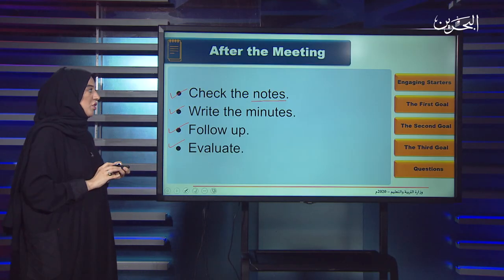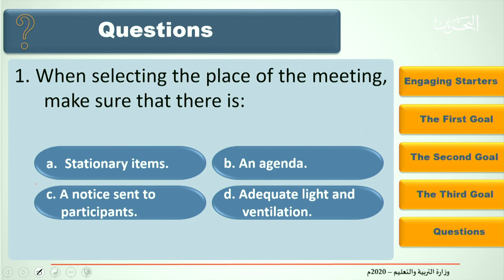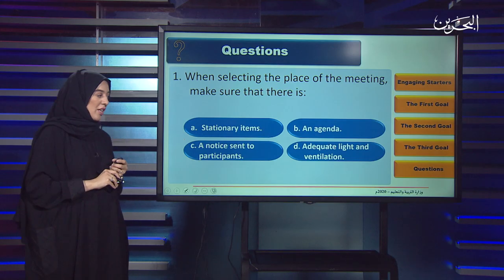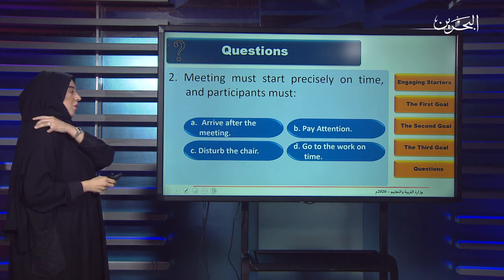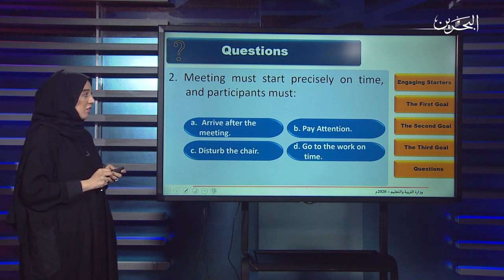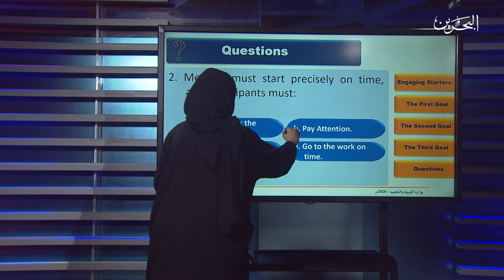Question one: When selecting the place of the meeting, make sure there is — A) Stationery items, B) An agenda, C) A notice sent to participants, D) Adequate light and ventilation. The answer is D, adequate light and ventilation. Question two: Meeting must start precisely on time and participants must — A) Arrive after the meeting, B) Pay attention, C) Disturb the chair, D) Go to work on time. The answer is B, pay attention.